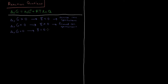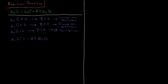When the extent of reaction equals zero, we are at equilibrium. We have also seen from previous videos that the expression for the standard Gibbs energy of reaction is that it is equal to minus RT times the natural log of K — and specifically KP if we are talking about pressures.